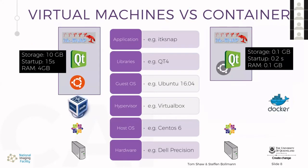Coming back to the virtual machines versus containers question — today you can't really say 'versus' anymore because the lines are very blurry. For example, if you run Docker on Windows, you're actually running it inside a virtual machine, you just don't see it. In the old days, we started with a computer, installed an operating system, then ran a hypervisor like VirtualBox on top. With VirtualBox, you had to define resources upfront — say, 10 gigabytes of storage, one CPU, four gigabytes of memory — before creating the virtual machine.